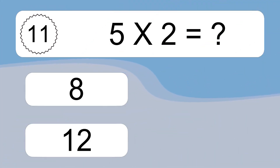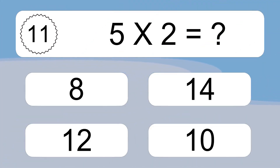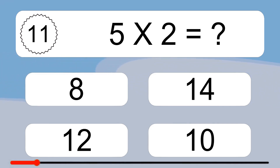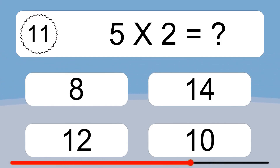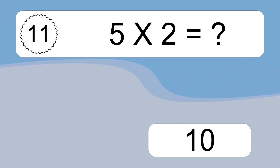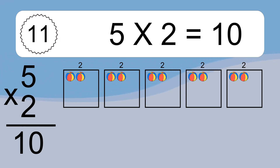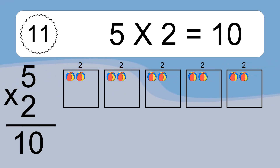5 times 2 equals what? 5 times 2 equals 10. We have 5 boxes and each box has 2 colorful balls inside. If you count all the balls in all the boxes together, you will have 5 times 2 balls. This equals 10 balls.